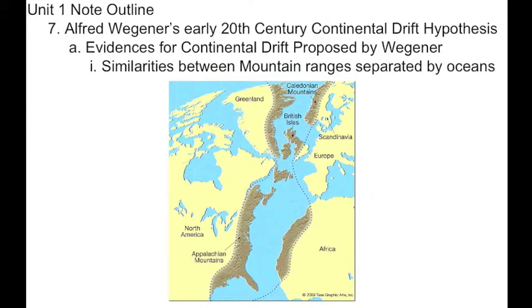When Alfred Wegener began looking further into this Continental Drift Hypothesis — the idea that the continents have been moving around — he noticed there are very similar rocks, mountain ranges, and formations separated by vast oceans. So perhaps at one time those ranges used to be together and have just been separated apart over time as the continents drift slowly away from each other.